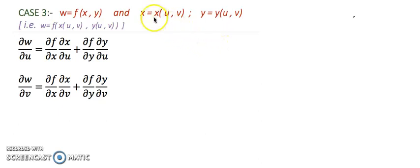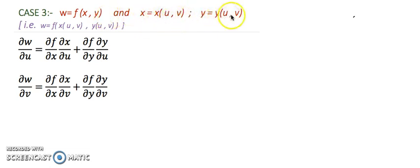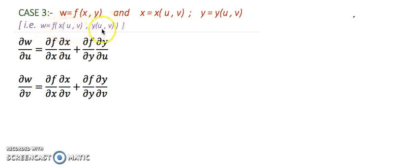Hello everyone. I am going to continue with the chain rule cases. In the current case we will see that when w is a function of x and y, and x is a function of u,v and y is a function of u,v, then what will be the rate of change of w with respect to u and v, because w is dependent upon u,v through x and y.